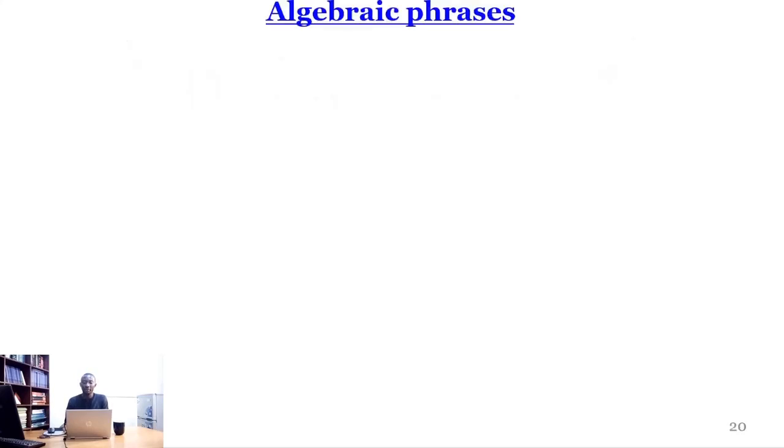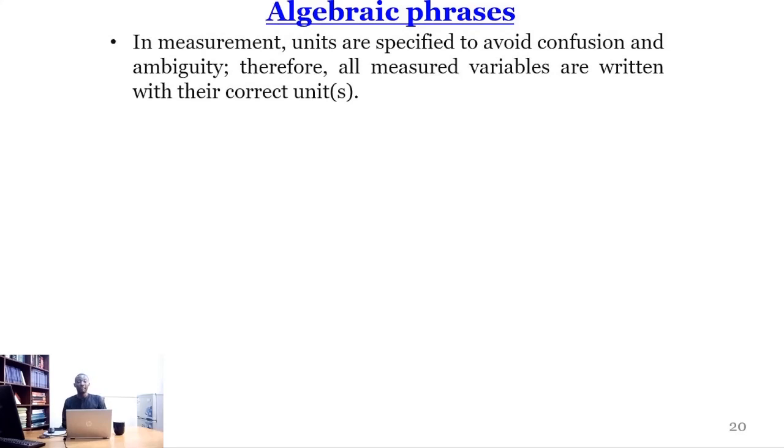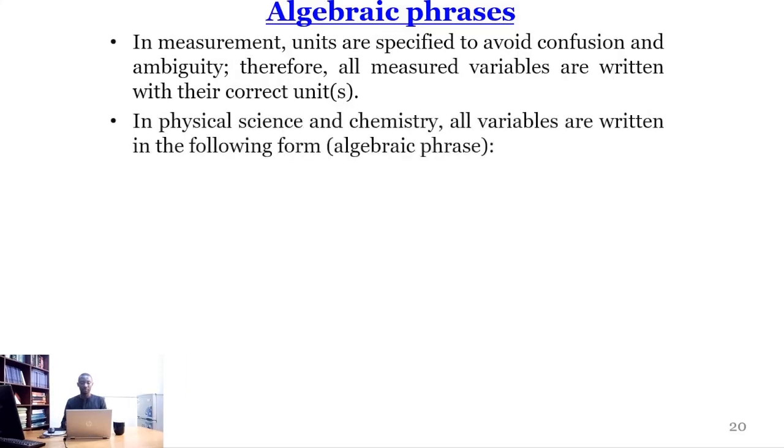Algebraic phrases. In measurement, units are specified to avoid confusion and ambiguity. Therefore all measured variables are written with their correct units: meter for length, second for time, and so on. In physical science and chemistry, all variables are written in the following form and this is referred to as an algebraic phrase.